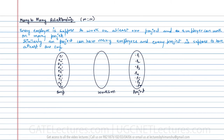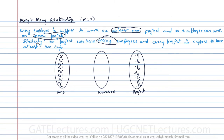They are saying every employee is supposed to work on at least one project. An employee can work on many projects. Similarly, a project can have many employees and every project is supposed to have at least one employee. You can clearly see: at least and many.